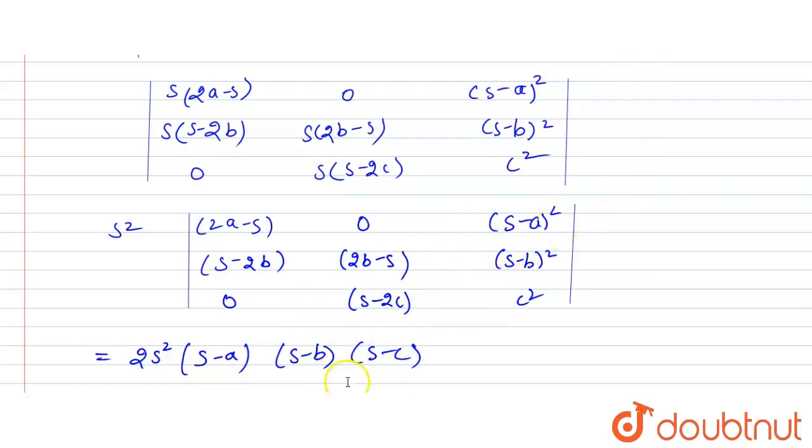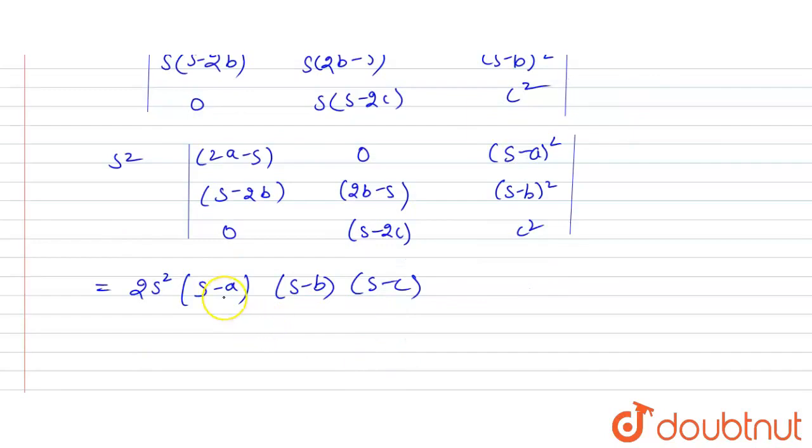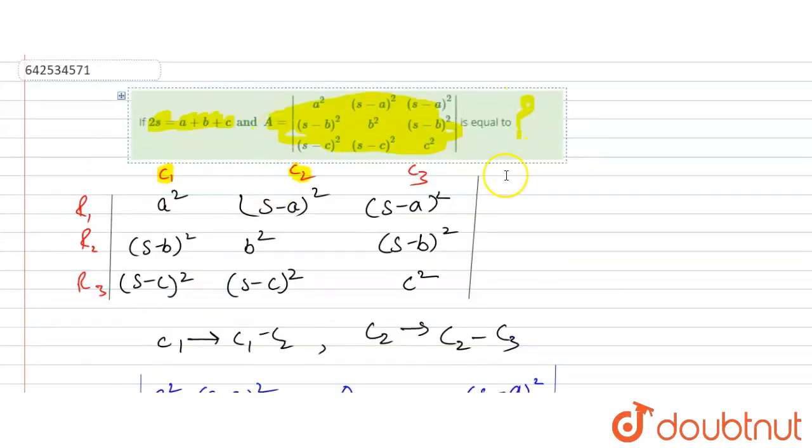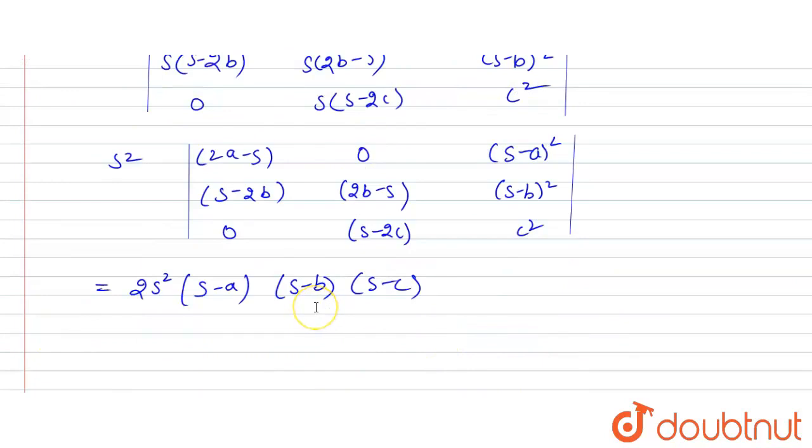So hence, we can say that the value of this determinant equals 2s²(s-a)(s-b)(s-c). This will be our final answer. This is the final value. Thank you.